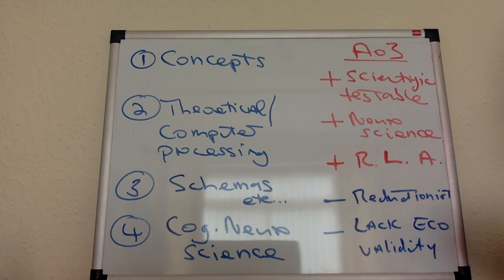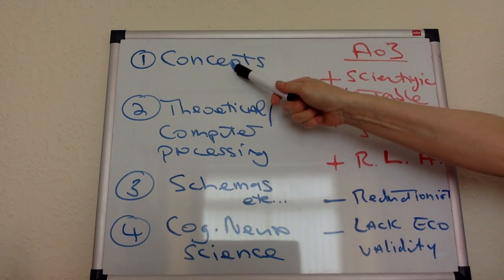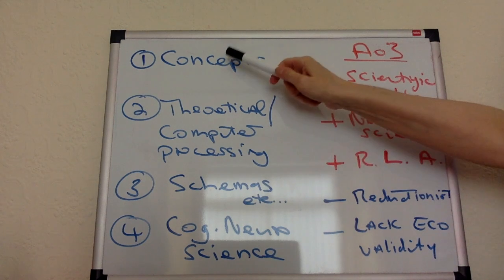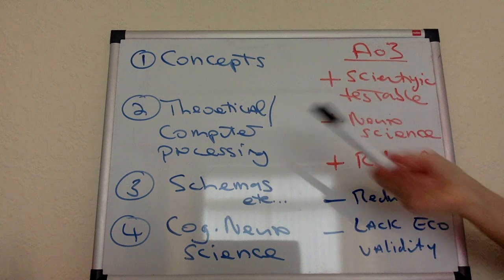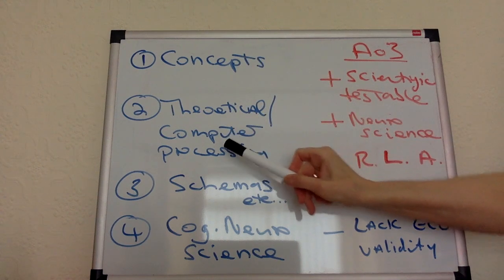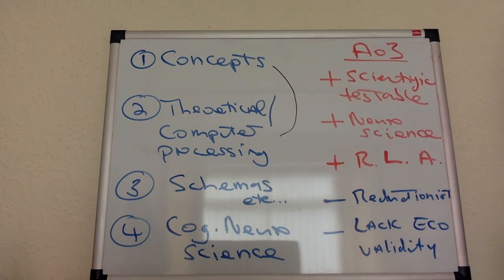It's about the huge controversy of making neuroscience really the main thing in this approach — there are a lot of critics of it and a lot of pluses too, but it's actually very interesting. So what are the concepts of the model? These are the AO1 points here for 6 marks. When you're talking about concepts of the cognitive model, you are going to bring in theoretical computer processing — these two more or less merge as you are discussing them.